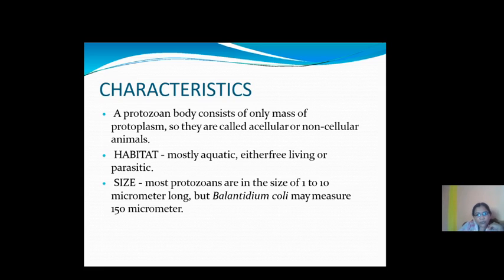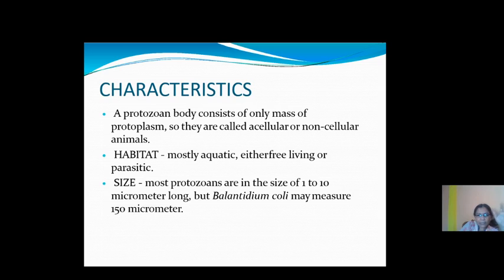Now we come to the characteristics of Protozoa. We study habit and habitat, body structure, and physiological characters of these organisms. The body of Protozoa consists of only a mass of protoplasm, so they are called acellular, non-cellular, or unicellular organisms. The single cell can perform all physiological activities.